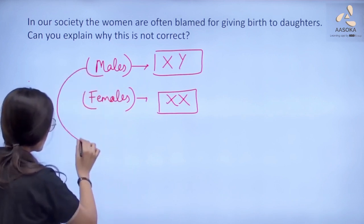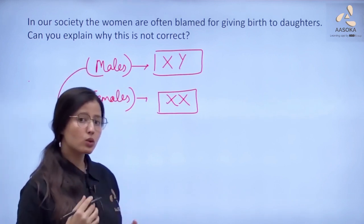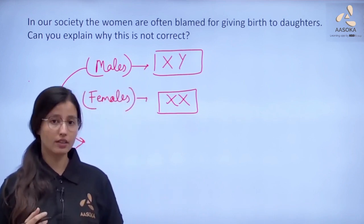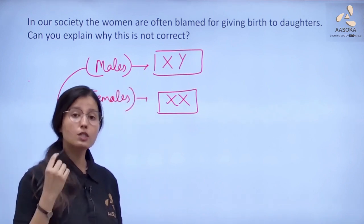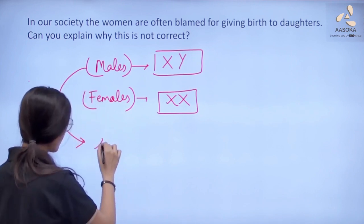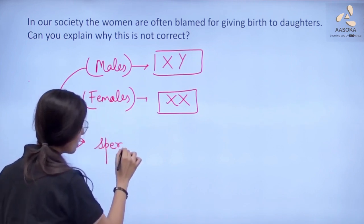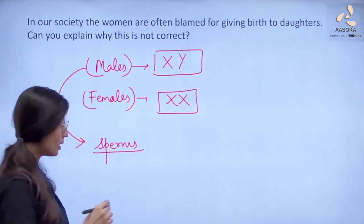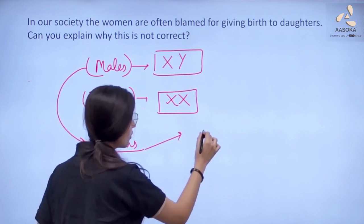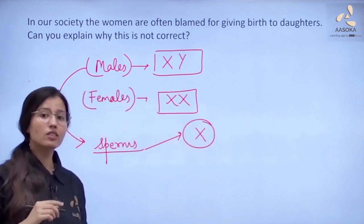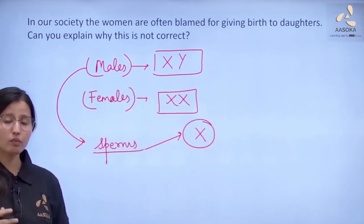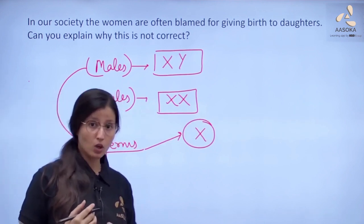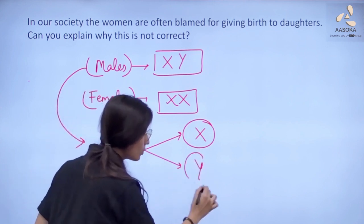In males, when gametogenesis takes place — that means when sperm is formed in males — the sperm will be of two types. 50% of the sperm will have the X sex chromosome and the rest 50% of sperm will contain the Y sex chromosome.